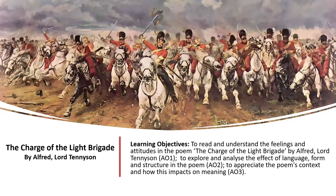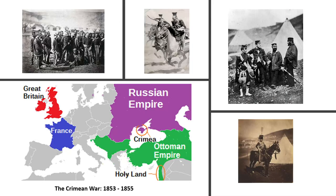If you haven't already got the poem in front of you, that would help — and perhaps some highlighters or pencils, something with which you can annotate. If you don't have that with you now, you might want to pause and get yourself ready. For this poem, it's important that we start with the historical context and understand something about what the Charge of the Light Brigade actually was, so we need to look at the Crimean War.